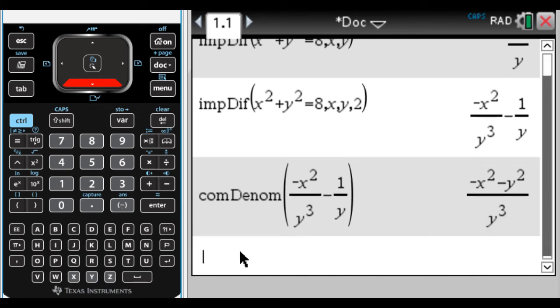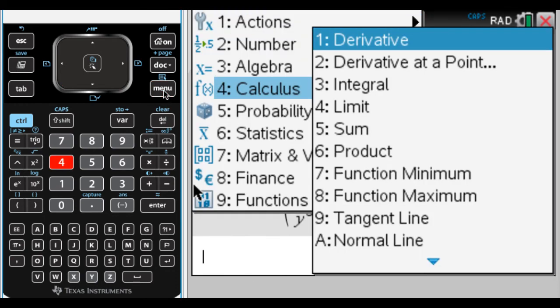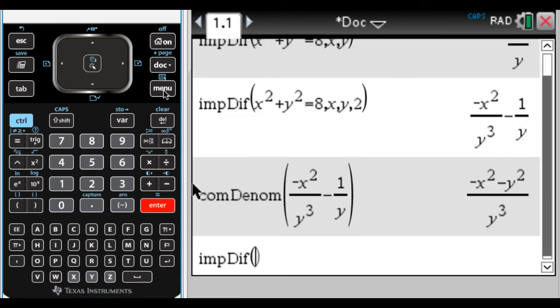So that's how it works. I'll do another one for you just so you can see it happen again. So it's menu, go to calculus, I usually press up for implicit differentiation. You have to type in your equation.